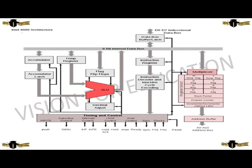Now coming to the Intel 8080 architecture. The address bus is from A0 to A15, connected to the address buffer. The data buffer consists of D0 to D7, an 8-bit input data bus connected to the instruction register. The instruction register and instruction system process all instructions to the instruction decoder and machine cycling encoder. The machine cycling encoder processes data to the time controlling unit. Time controlling consists of write (WDR), data bus controller (DBIN), interrupt controller (INT and INTE), hold controller, hold acknowledgement, wait controller, ready controller, sync, and clock phases 1 and 2.